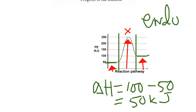Finally, for activation energy, we're not starting at zero, we're starting from 50, and we're going up to 250. So, it would be 200 in the forward direction. And the activation energy in the reverse would be going from 100 to 250. So, 150 in the reverse.